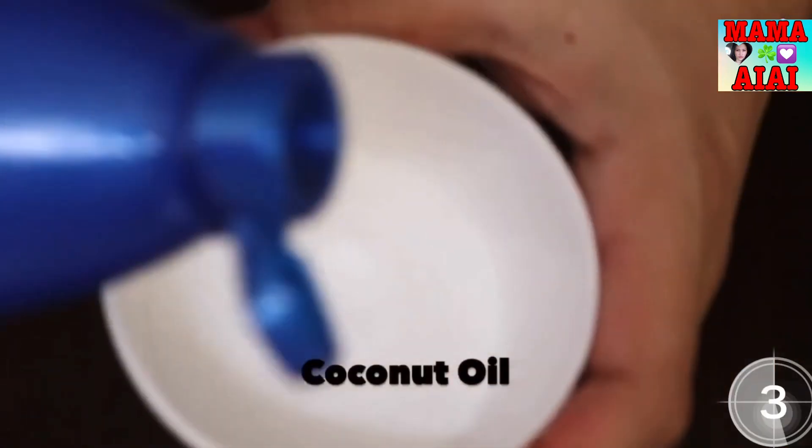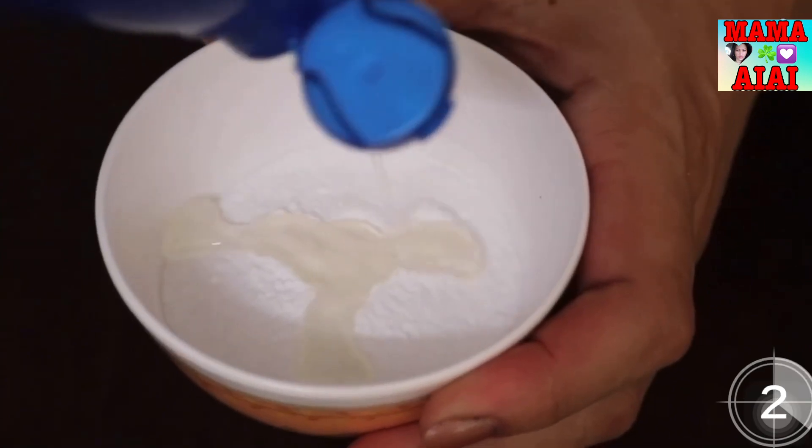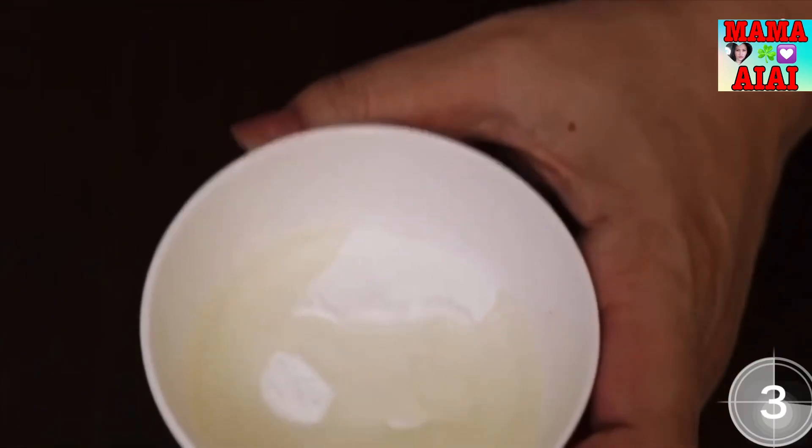Then pour enough coconut oil to create a smooth consistency. Coconut oil is a great anti-aging oil. It reduces the appearance of fine lines, wrinkles and spots on your hands.